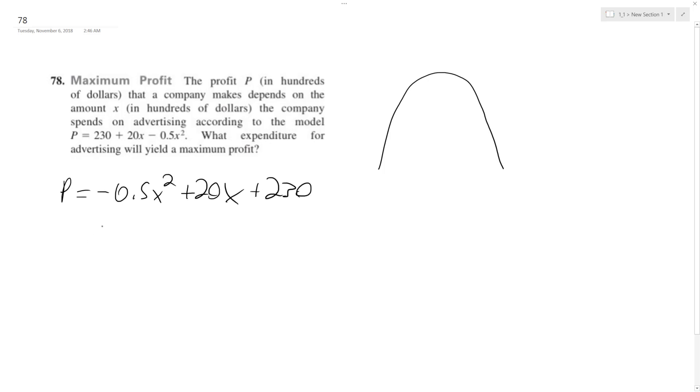I'm gonna find my vertex, or the X quantity we need, by doing negative B over 2a.